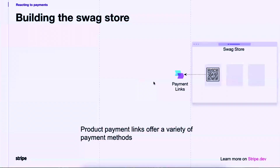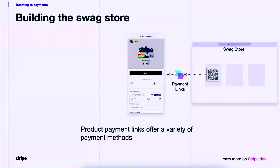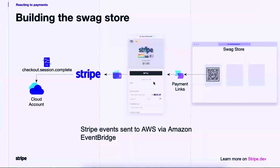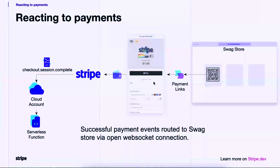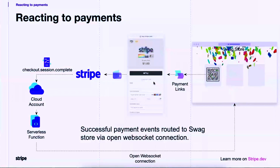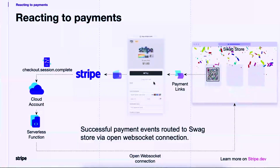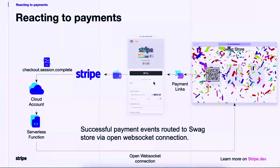The next thing that happens is taking payments. When the page renders, I take the payment link URL and use a JS library to generate a QR code. When you scan the QR code, load the payment link, and enter your credit card details — or use Apple Pay, nice and quick — as soon as that payment is made, it creates a checkout.session.complete event in Stripe. That event is sent to my Amazon EventBridge bus using event destinations. I could use a webhook as well, but since my account is built on AWS, I use event destinations. The Lambda function then pushes it onto the open WebSocket connection, allowing my front end to react in real time at immense scale — thousands of simultaneous orders, with this AWS infrastructure scaling out across all those WebSocket connections. We've seen this happen at live events where hundreds of people rush to the booth when a talk ends.